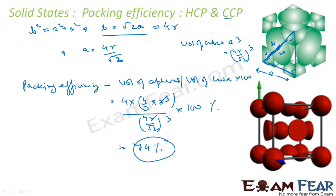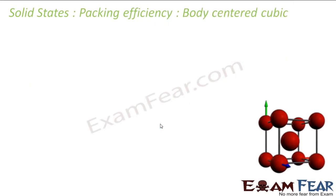The packing efficiency for FCC/CCP is 74%. That's why I wrote r in terms of a — because volume of the unit cell is always a³, and if I can write a in terms of r the common terms cancel out. Now let's find the packing efficiency for body-centered cubic, where the number of spheres is 2: one from the corners and one in the center.